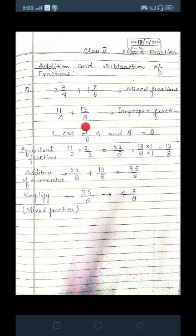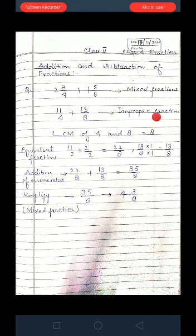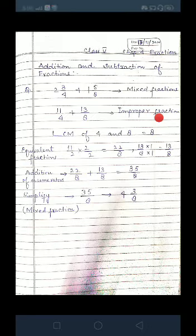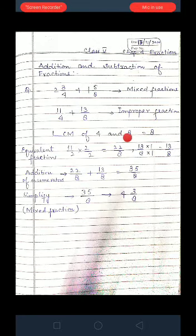Now these are improper fractions. So if you are given improper fractions, you can start. Start by taking out the LCM of the denominators 4 and 8. LCM will be 8.